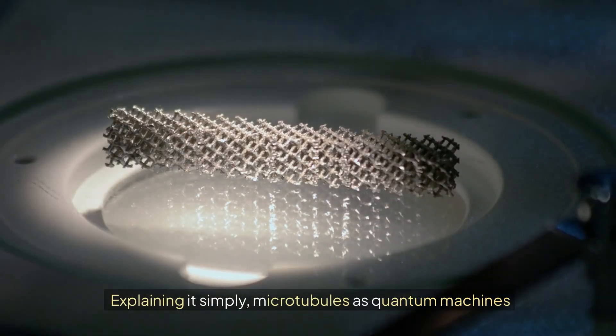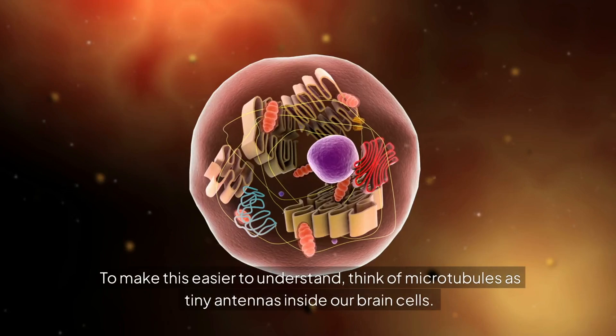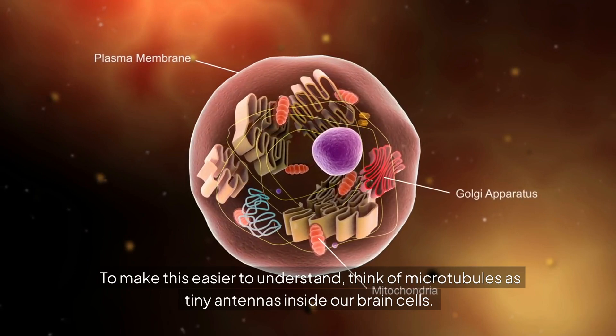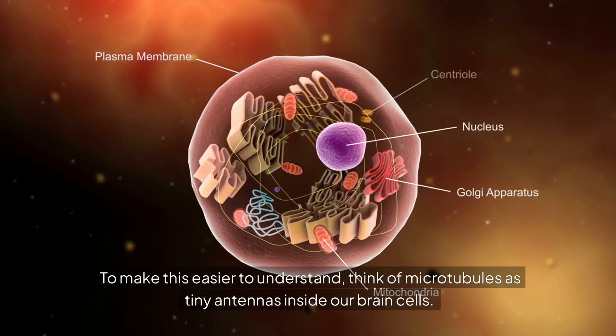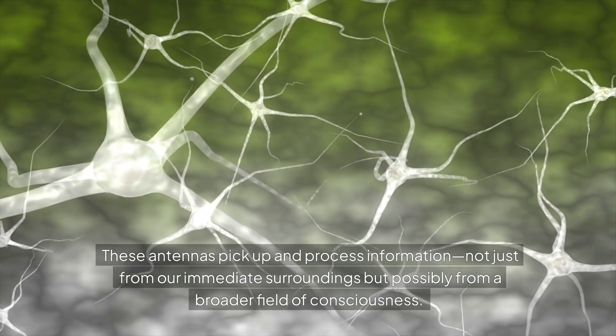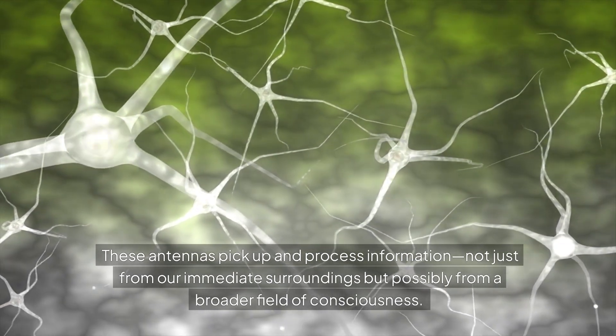Explaining it simply, microtubules as quantum machines. To make this easier to understand, think of microtubules as tiny antennas inside our brain cells. These antennas pick up and process information.